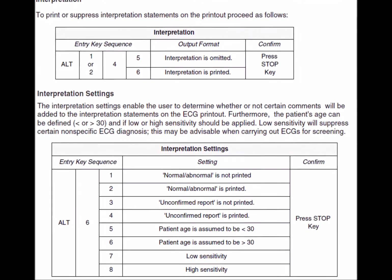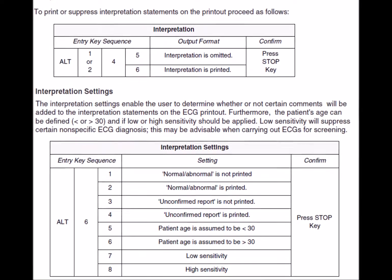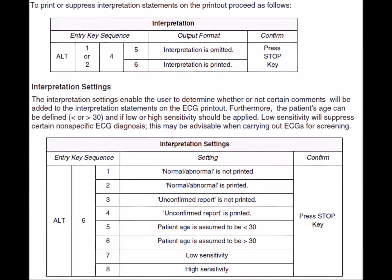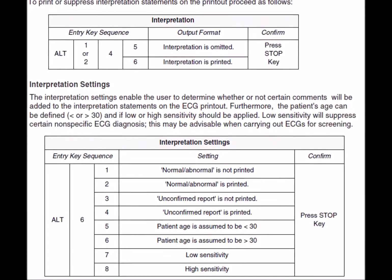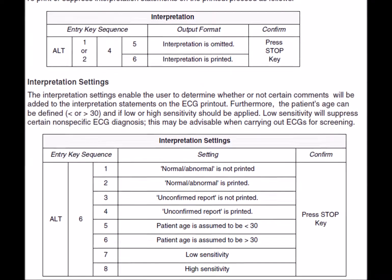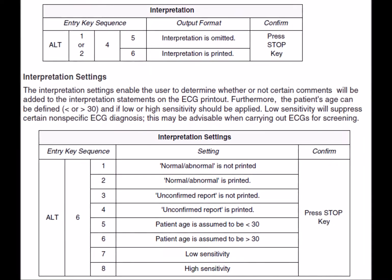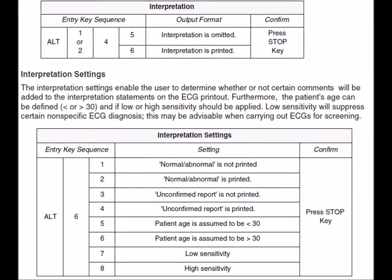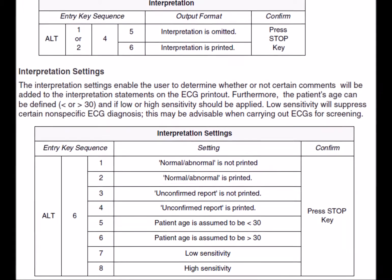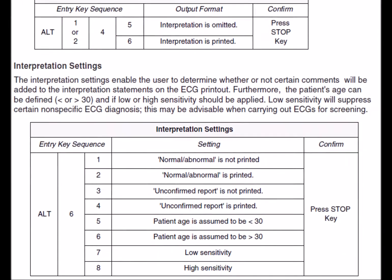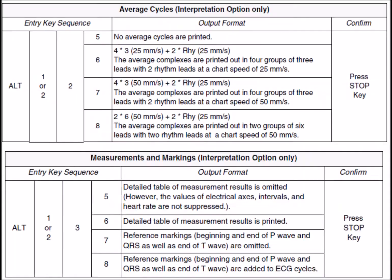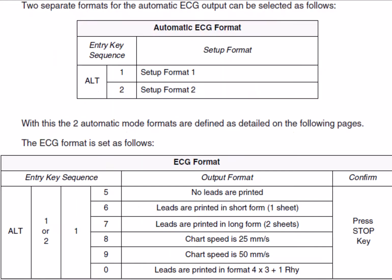The following key sequences are used to either print or suppress the interpretation statements on the printout, and will define what will be printed on the interpretation statement if the interpretation is set to print. If the interpretation is installed in the device, these are the codes used to define the average cycles and the measurements and markings.